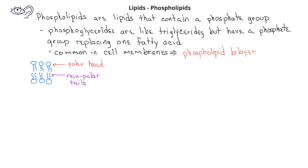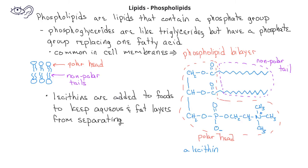One phospholipid that's used in foods is known as lecithin. Lecithins are useful for preventing aqueous and fat layers from separating. The polar ends with the oxygens and the phosphates will align themselves toward the aqueous components, whereas the nonpolar hydrocarbon components will align themselves with the nonpolar or fat part of the foods.